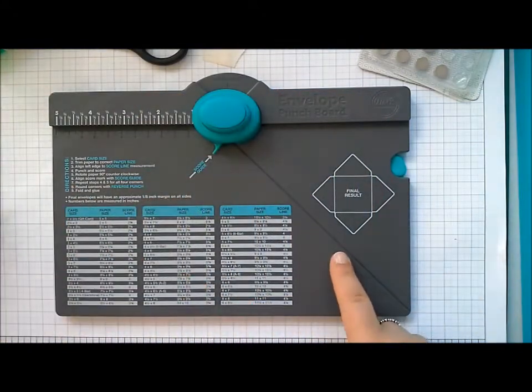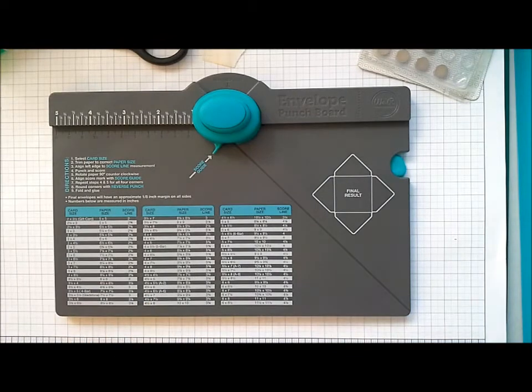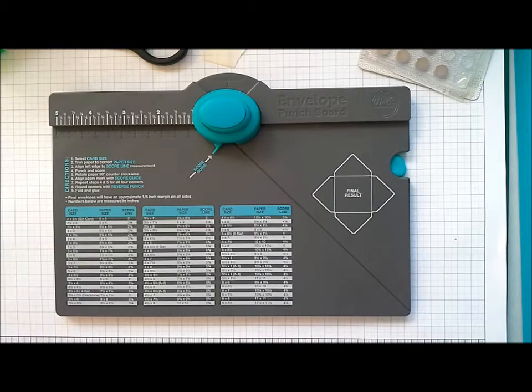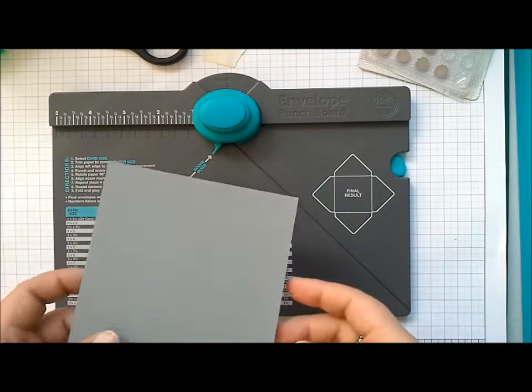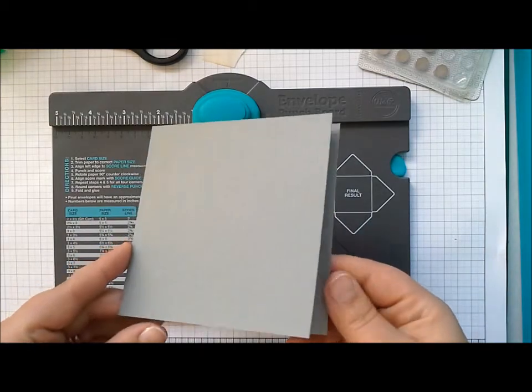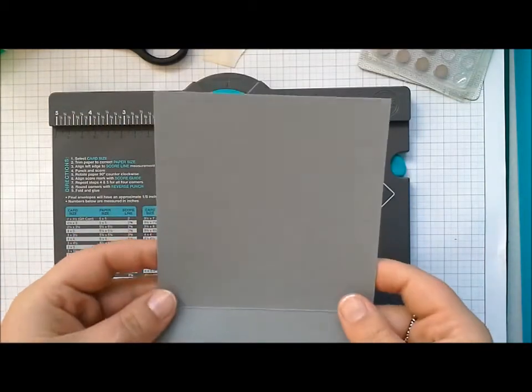These are made using the envelope punch board which is extremely easy to find. You can find it in most craft stores and Stampin' Up also have a version which is exactly the same, just in Stampin' Up colors. For my card I've started with a four and a half inch square card base and first we're going to create the little tabs.